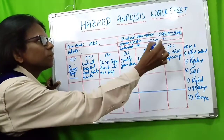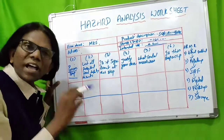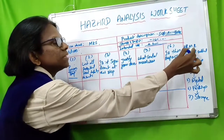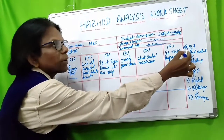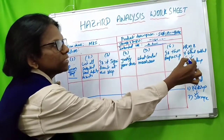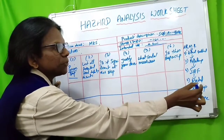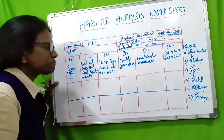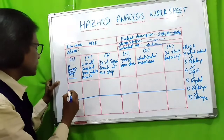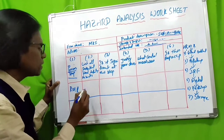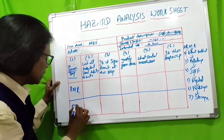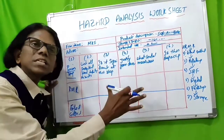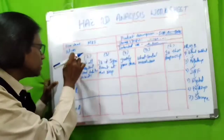For the hazard analysis worksheet, step one is to list the process steps. For our product — raw IQF frozen fish fillets, scombroid — the key process steps are: raw material receiving, gilded and gutted, filleting, IQF, metal detection, packing, and storage. These steps are listed in column one of the worksheet.